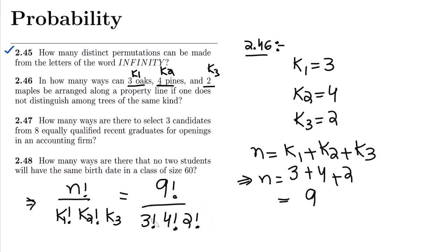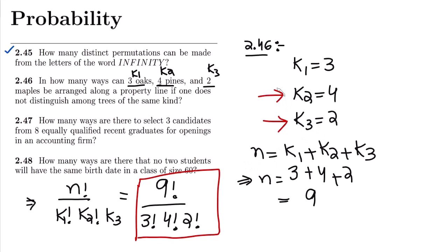Solving it, we get the answer — again an application of the multinomial probability law. That is the solution, and I will see you with more interesting stuff in our upcoming video where we will solve questions 2.47 and 2.48. See you soon.